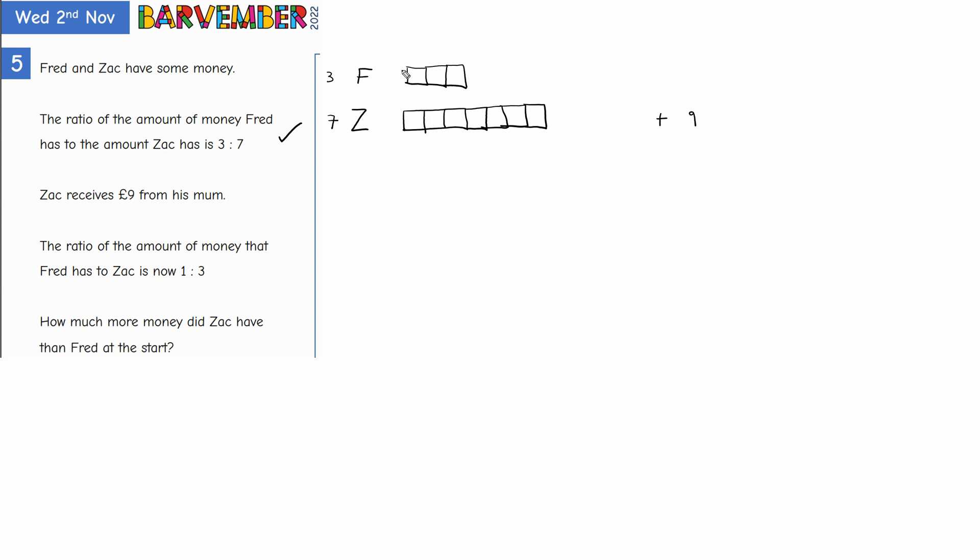Now Fred's amount of money doesn't change. So this is my one. So here I'm going to use a different colour. So this is also one then. And for every one that Fred has, Zach has three. Well, here is the second one. And that means, if we add the nine pounds, that must take us to this, where there's three equal parts here.